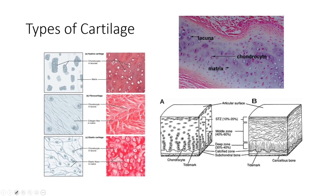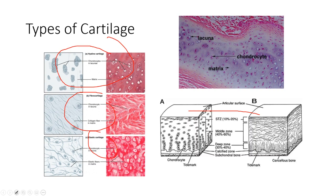Here's a breakdown looking at different histology slides of cartilage — hyaline is probably the most common — here's fibrocartilage and elastic cartilage. It's showing what we're talking about: we've got the perichondrium, the ECM matrix, and the different chondrocytes. Most of the cartilage is water — it's almost like a hydrogel.